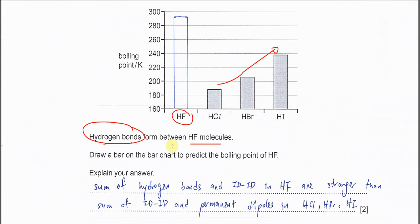Explain your answer. Very easy. Why does HF have higher boiling point? You must mention the sum of hydrogen bonds and IDID in HF. First you need to understand every molecule will have IDID because every molecule must have electrons. Whenever there is an electron, IDID will form. It's just because HF forms a stronger intermolecular force, the strongest, which is hydrogen bond. Therefore, the boiling point of HF is much higher than the others.